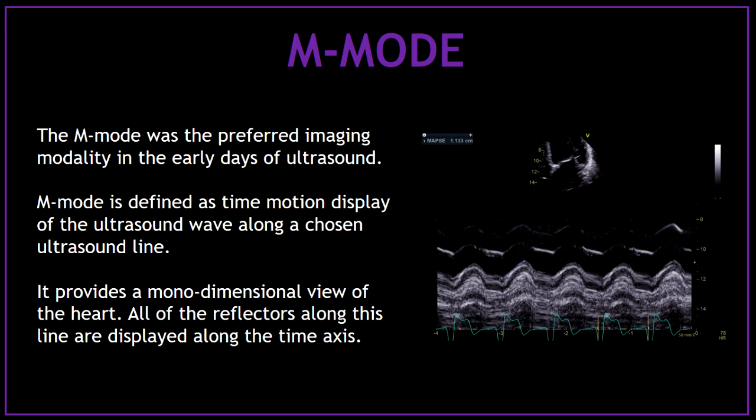The M-mode was the preferred imaging modality in the early days of ultrasound. M-mode is defined as a time-motion display of the ultrasound wave along a chosen ultrasound line. It provides a monodimensional view of the heart, and all of the reflectors along this line are displayed along the time axis.